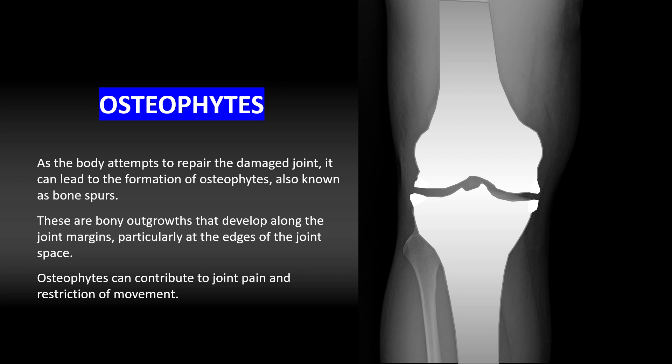You may also see the formation of osteophytes. As the body attempts to repair the damaged joint, it can lead to the formation of osteophytes, also known as bone spurs. These are bony outgrowths that develop along the joint margins, particularly at the edges of the joint space. Osteophytes can contribute to joint pain and restriction of motion.